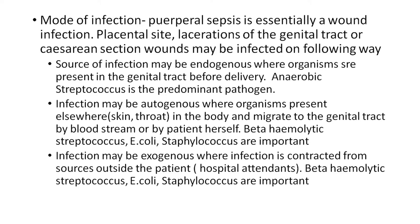Mode of infection: Puerperal sepsis is essentially a wound infection. The placental site, lacerations of the genital tract, and cesarean section wounds may be infected in the following ways. The source of infection may be endogenous, meaning organisms present in the genital tract before delivery — anaerobic streptococcus is the predominant pathogen. Infection may be autogenous, meaning various organisms present elsewhere in the body migrate to the genital tract by the bloodstream or by the patient herself — beta-hemolytic streptococcus, E. coli, and staphylococcus are among these organisms.